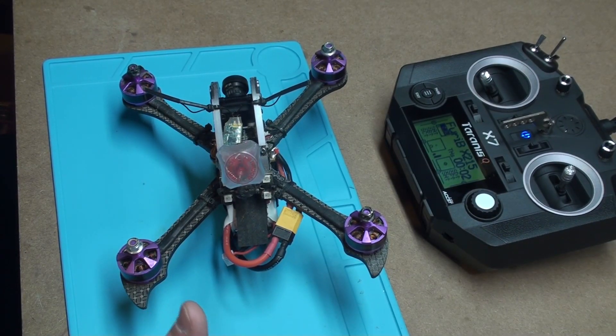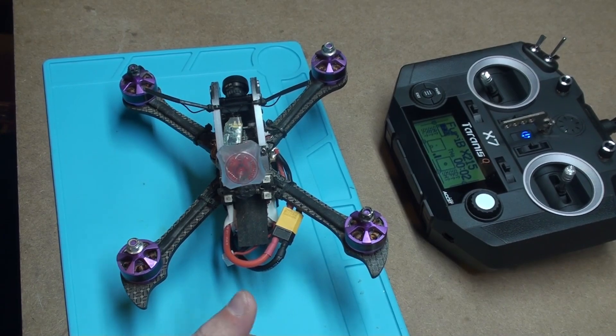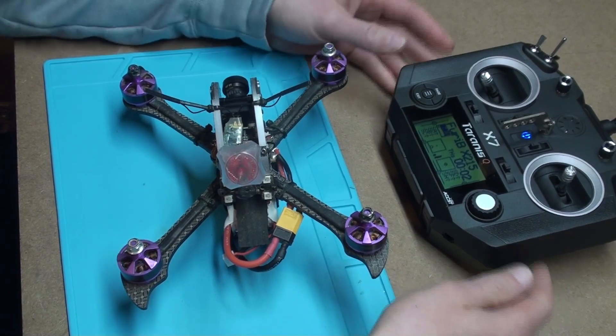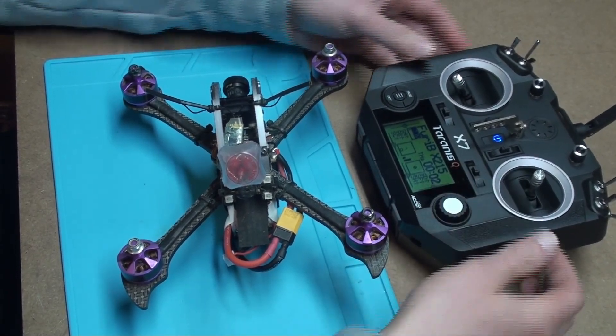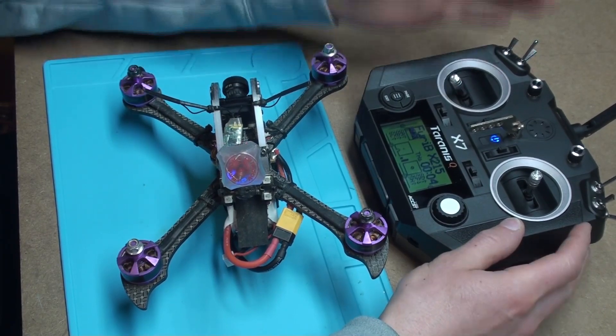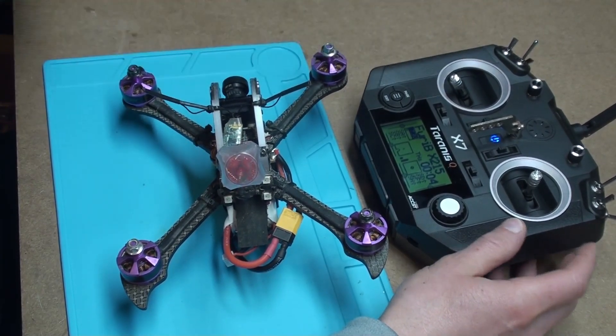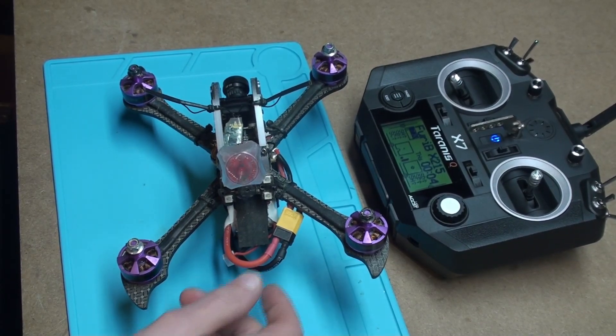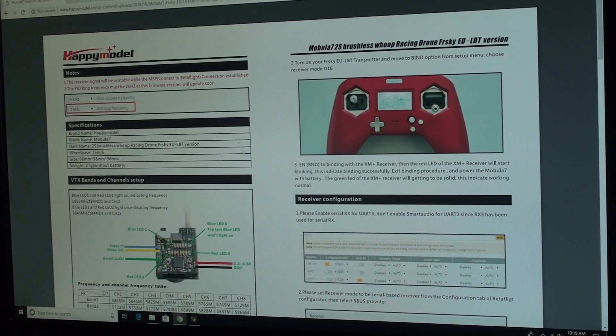To rule out any other problems with the receiver, I tried to rebind the Mobula 7's receiver which did not work. So last I thought, let me just make sure it's not my transmitter. So I hooked up another quad and the transmitter works fine. So it is now isolated to the receiver of the Mobula 7.